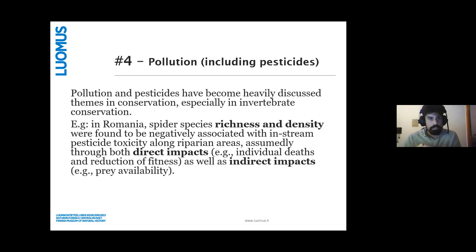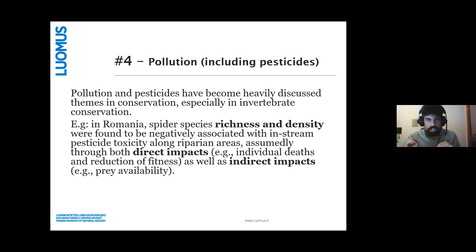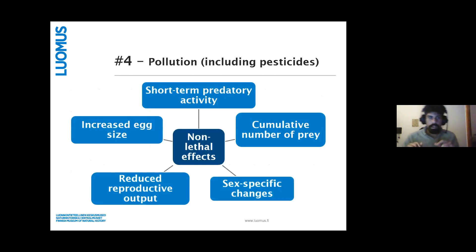Pollution and pesticides have become very recent and controversial topics, especially in invertebrate conservation. One case study from Romania found that species richness and density were negatively associated with in-stream pesticide toxicity. Toxins and pesticides may have both direct impacts — such as individual deaths — and indirect impacts such as reduced prey availability. Non-lethal effects can include short-term changes in predatory activity, sex-specific changes, and increased ecdysis, among others.